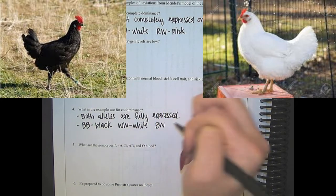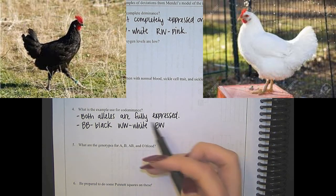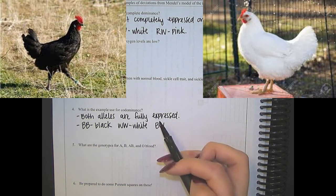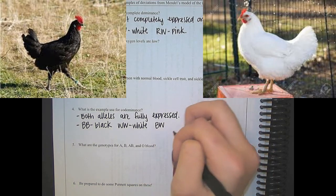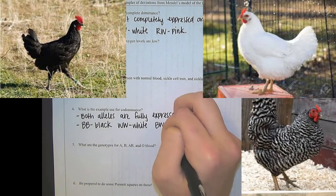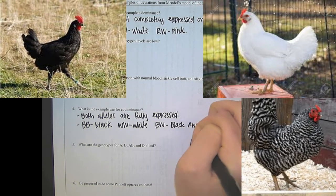And where it gets interesting is if you have one black allele and one white allele. So in codominance, they're both going to be fully expressed. So it's going to fully express both black and white alleles. So you'll end up with a chicken that has both black and white feathers.